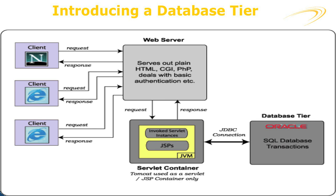The web server further sends the request to the servlet container. If the servlet container requires data, it interfaces with the database tier and fetches data as per the requirement. Data sent by the client to the web server is also stored in the database tier. So, if we need to insert data, we send it to the database tier; if we need to fetch or search data, we access it from there. This entire setup — client, web server, servlet container, and database server — can scale to any number of servers.